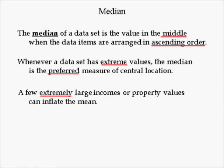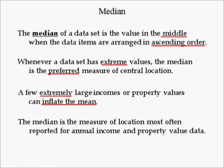A few extreme large incomes or property values can inflate the mean. The median is most often reported for annual income and property value data. Consider the incomes of Bill Gates and LeBron James — they are just as likely to be selected in a survey of 50 Americans as you are, each with a probability of about 1 in 300 million. If they aren't in the sample, the sample mean is probably close to the median. However, if one of them shows up in a sample of 50, the sample mean will be in the millions whereas the sample median will not.